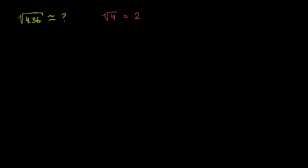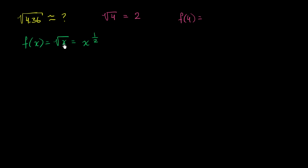So let's imagine that we have the function f(x) equal to the square root of x, which is of course the same thing as x to the 1/2 power. We know that f(4) is the square root of 4, which is equal to 2 — the principal root of 4, which is positive 2. And what we want to approximate is f(4.36). This is just another way of framing the exact same question we started with.